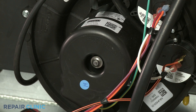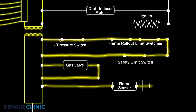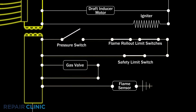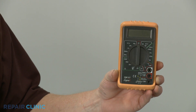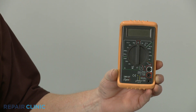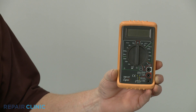If the draft inducer fan motor does not turn on or runs too slow, the pressure switch will not close, stalling the ignition sequence. A faulty pressure switch may also be unable to close, preventing the ignition sequence from continuing. You can determine if the pressure switch is malfunctioning by using a multimeter to test the installed component for electrical continuity while the draft inducer fan motor is running.